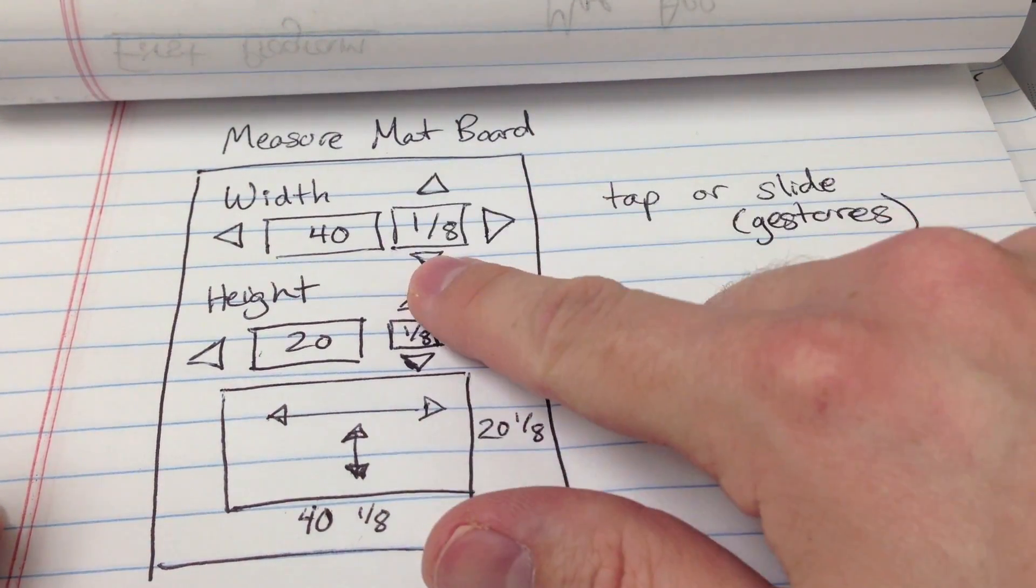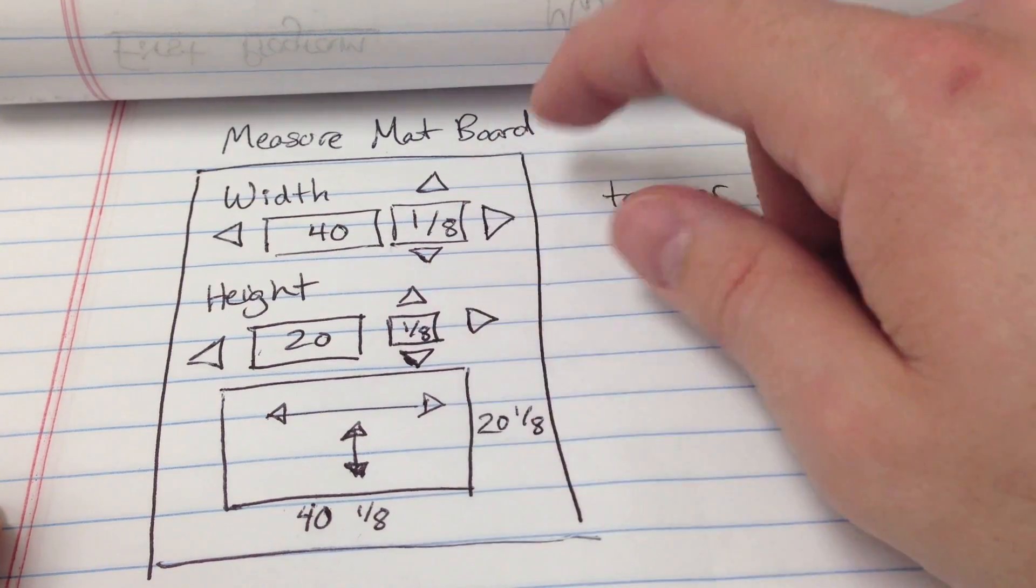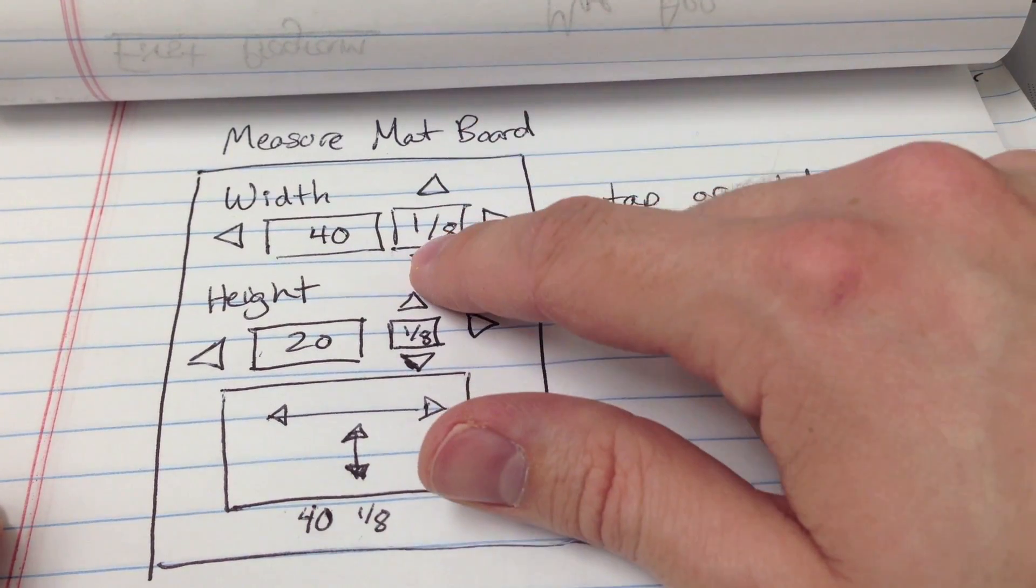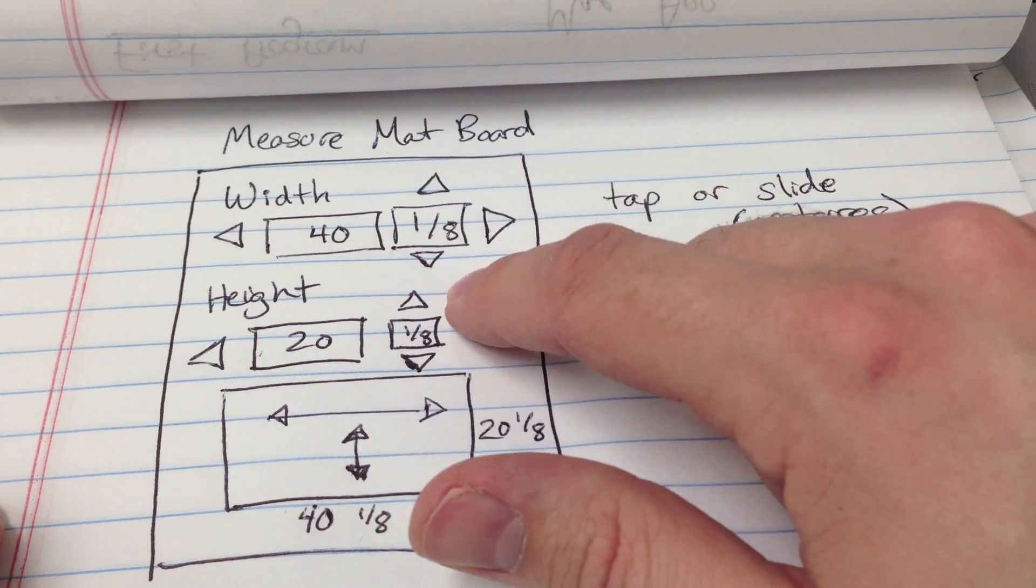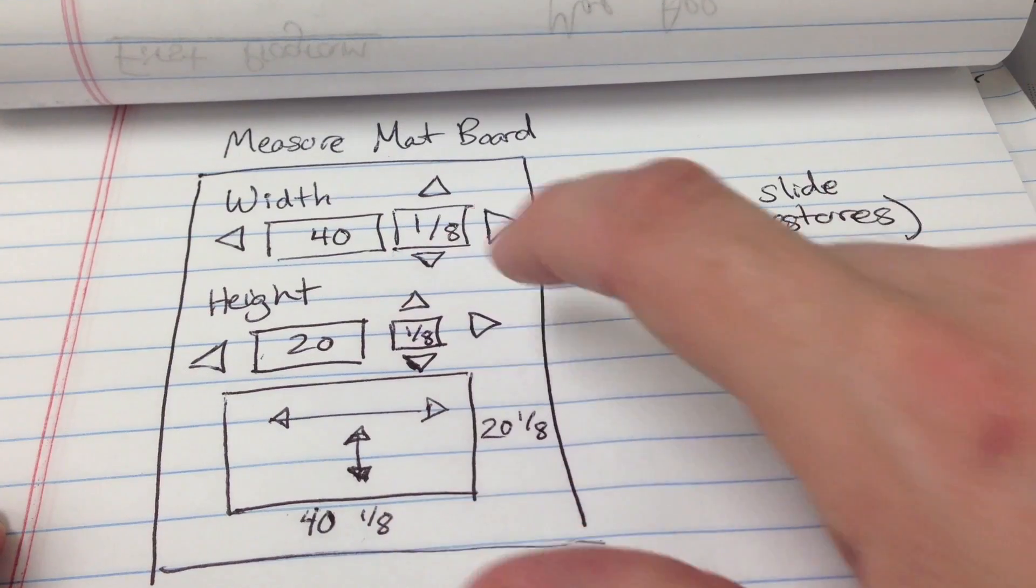We can do the same thing for smaller movements. Say I want an eighth of an inch or a sixteenth of an inch—we would be able to tap up and down to control that, or we could drag up and drag down.